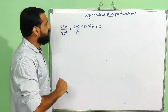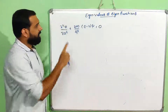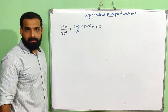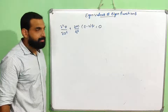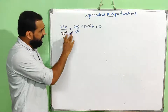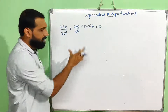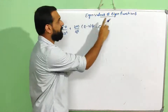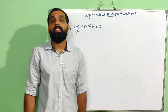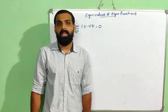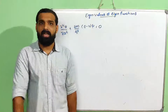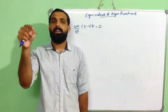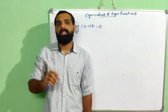Now back to the steady state equation. This is the steady state form of Schrödinger's equation. We will now discuss eigenvalues and eigenfunctions. You can learn this through the matrix formulation.